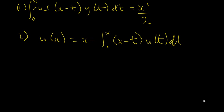Welcome to my channel. Here we're going to work examples on the Volterra integral equation and solve them. These two are examples of the Volterra integral equation. The first one is of the first kind because the unknown function only appears under the integral sign. The second one is of the second kind because the unknown function u(x) appears outside the integral sign as well as inside.